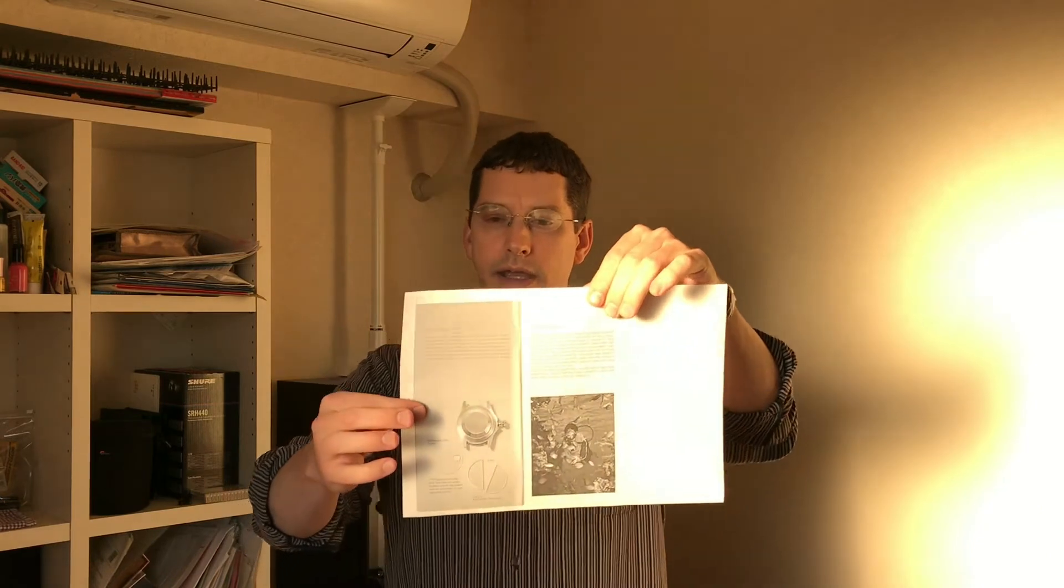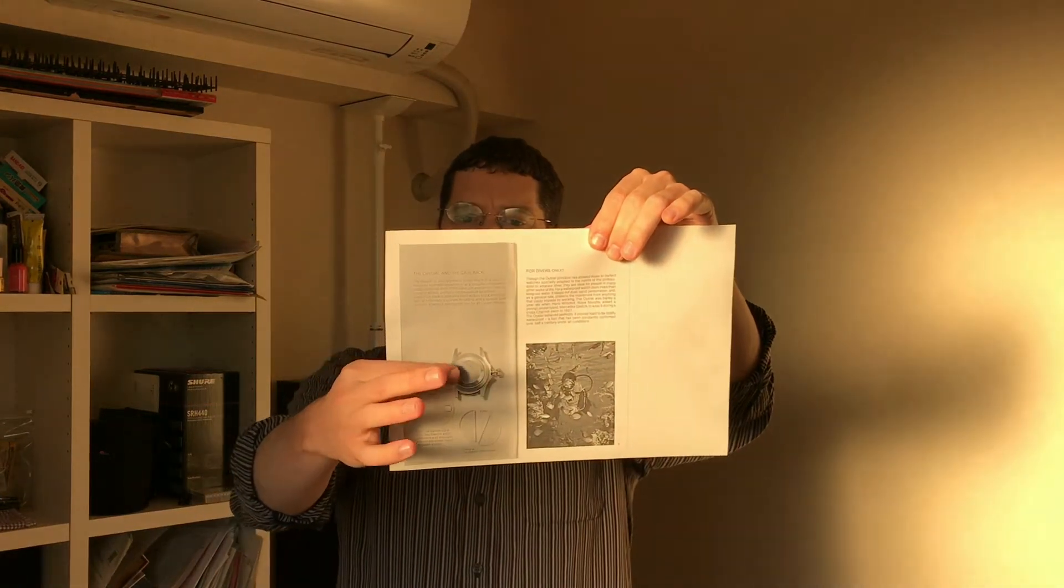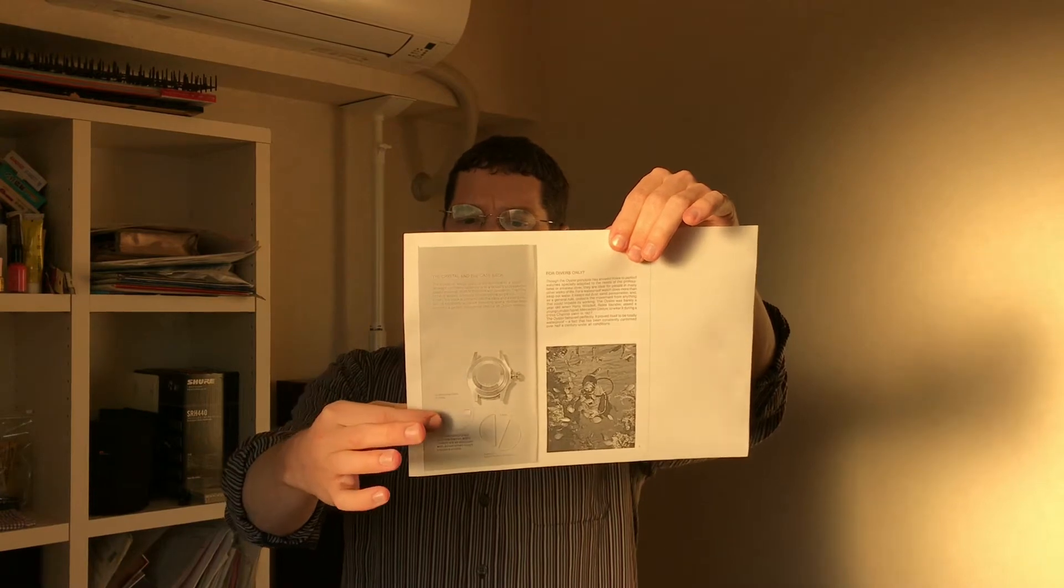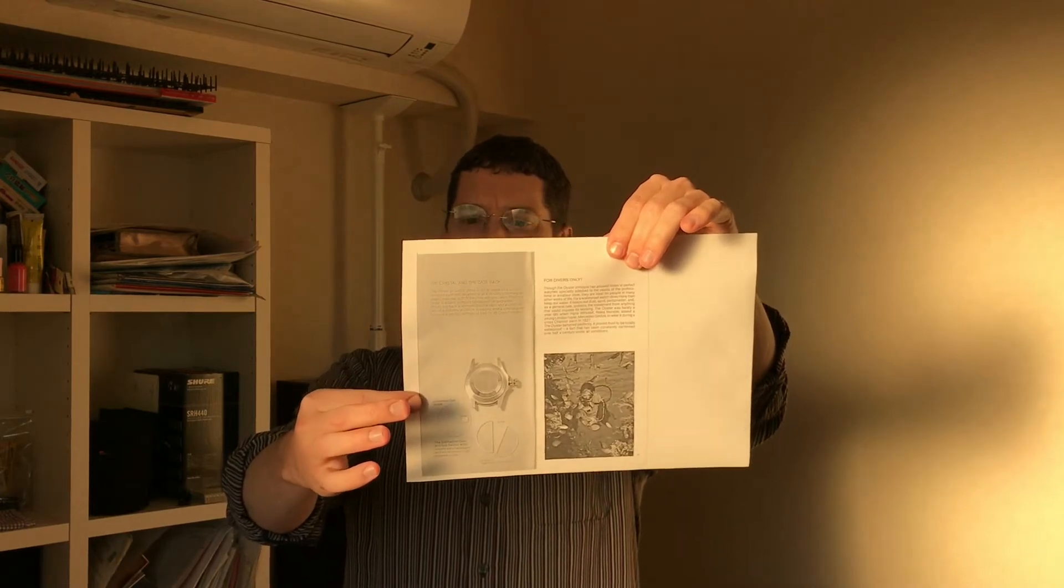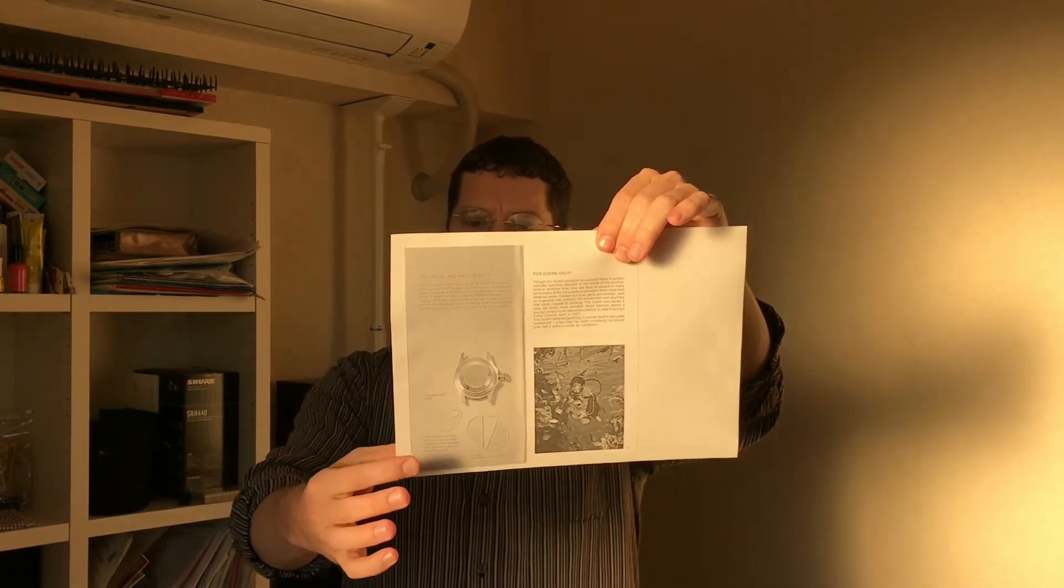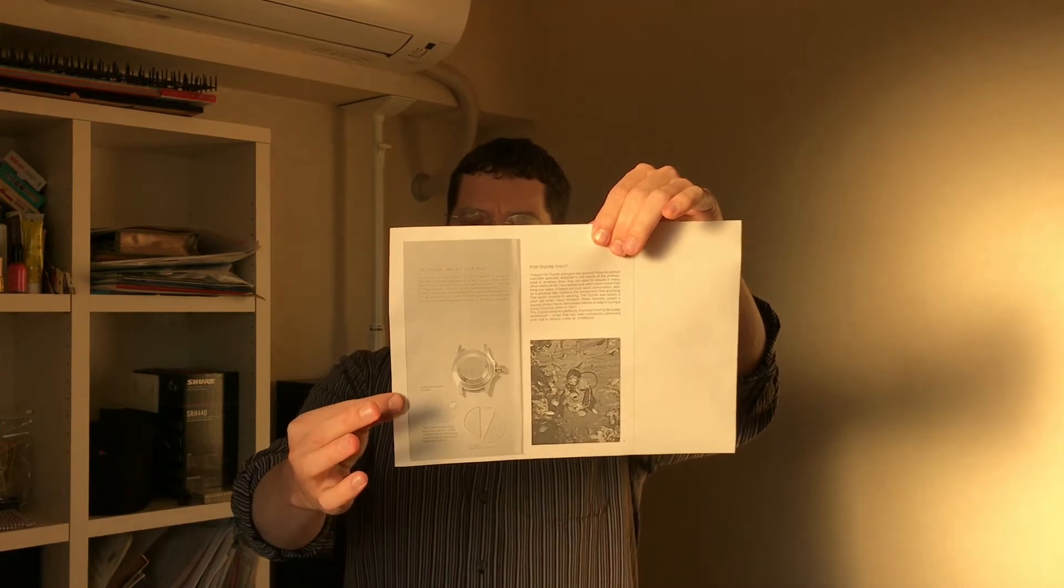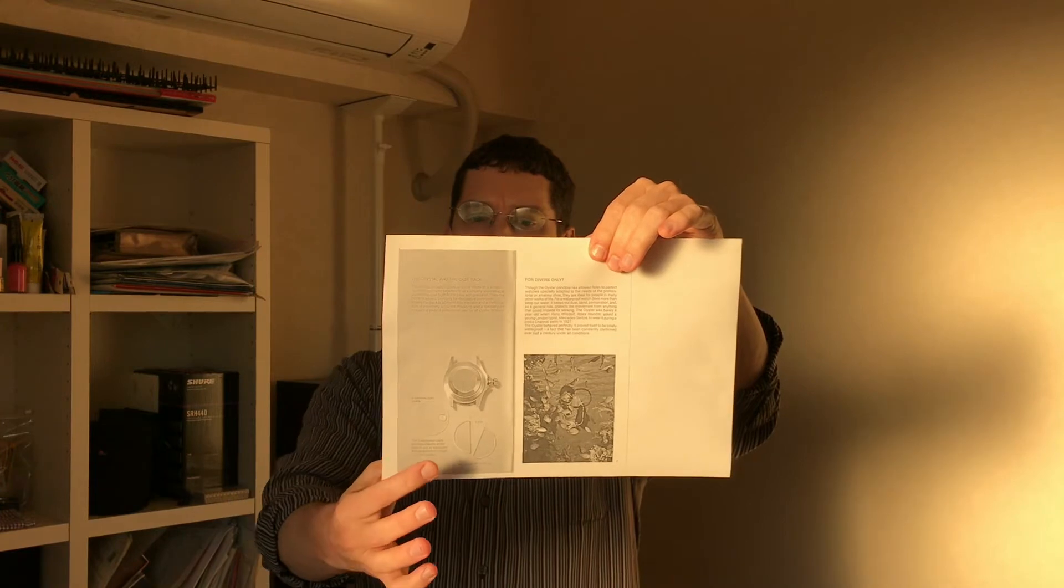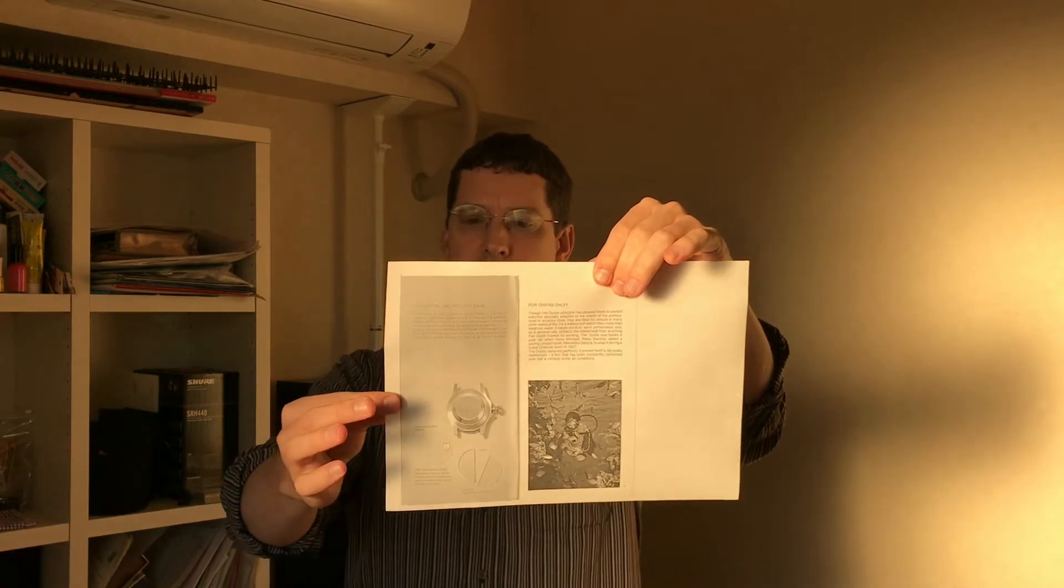Now, this heading, The Crystal and the Case Back, and you can see right here the picture. This is an Oyster Case Back, and right here is a Submariner Date Crystal, and here a cut of a Sea Dweller 4000 crystal, which apparently is 3 millimeters thick.